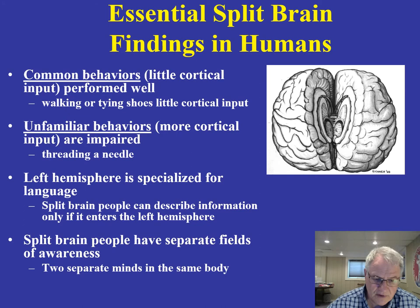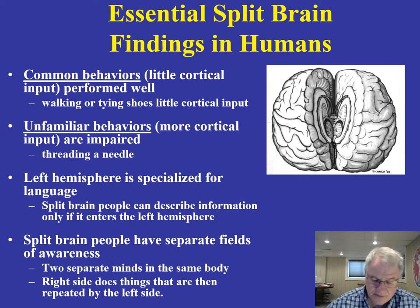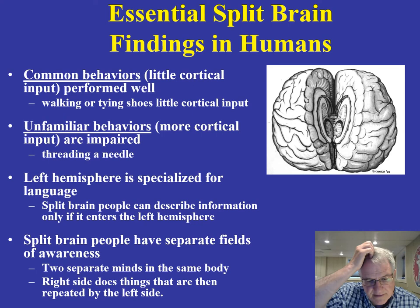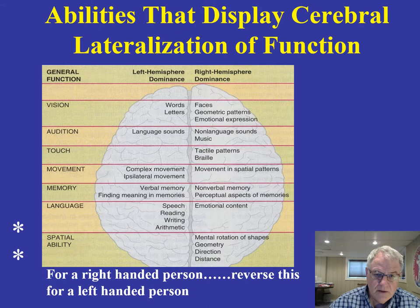Split-brain people have separate fields of awareness — it's two separate minds in the same body. This is revealed in simple things like a right-handed man putting on his pants in the morning: he'll use his right hand to zip up his zipper, but immediately his left hand comes down and unzips it. It's as if there's no coordination between the two hemispheres of the body.